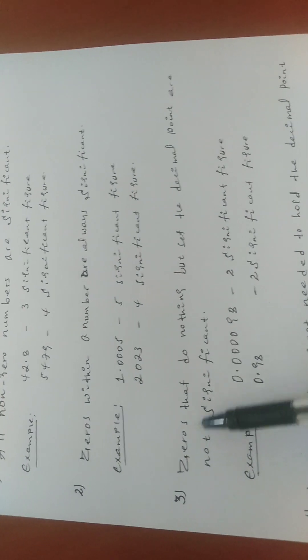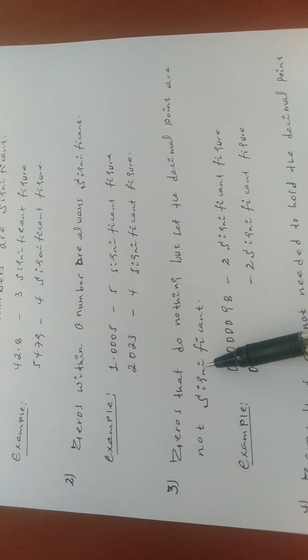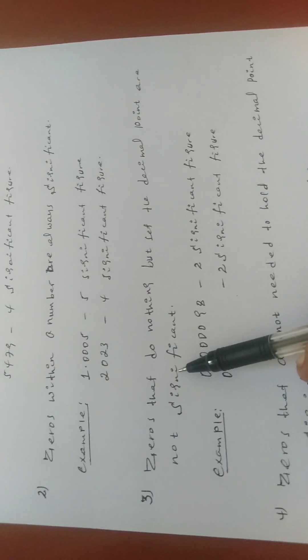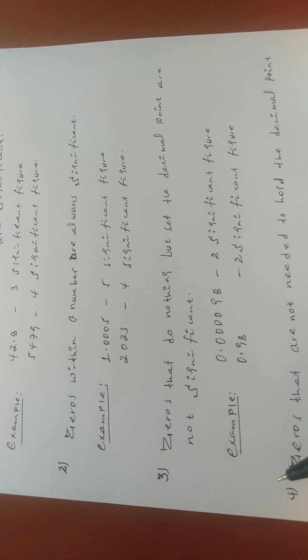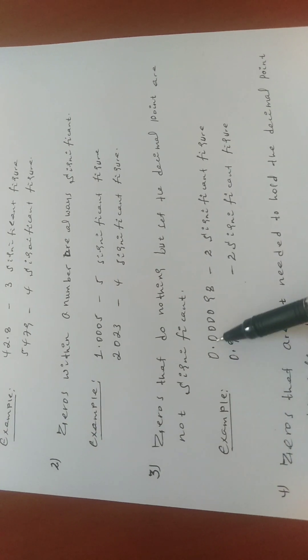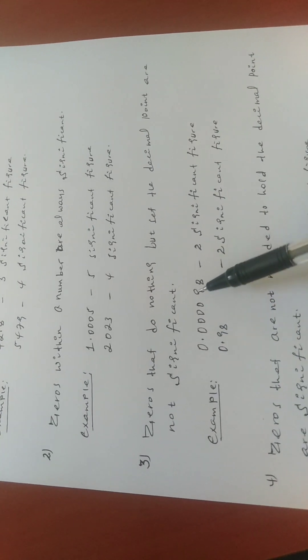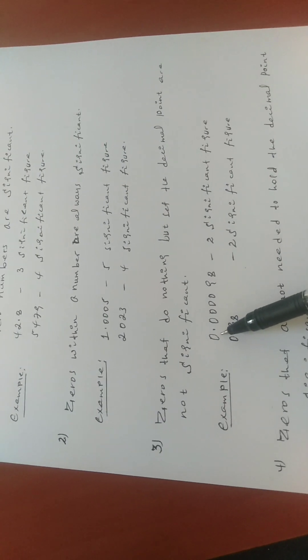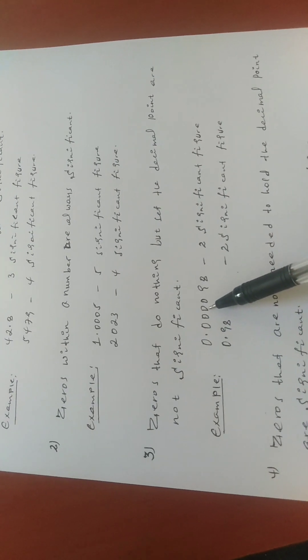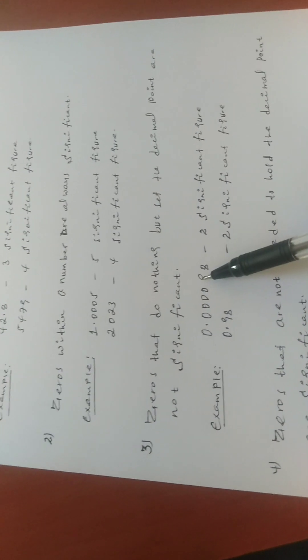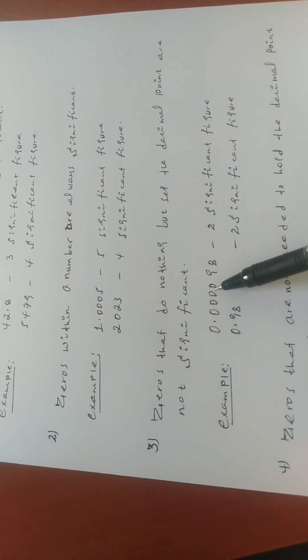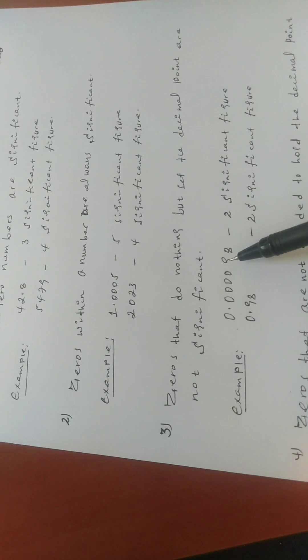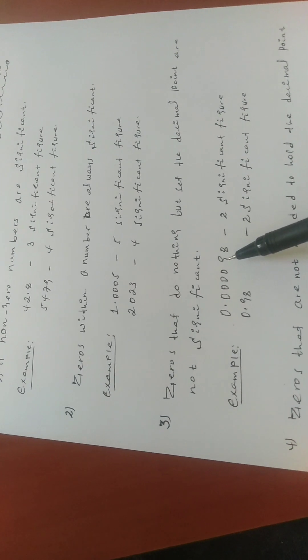The third rule: zeros that do nothing but set the decimal point are not significant. For example, 0.0000982 — the significant figures are only 9 and 8, because the leading zeros are only there to show the decimal point. So 0.000098 has two significant figures: nine and eight.